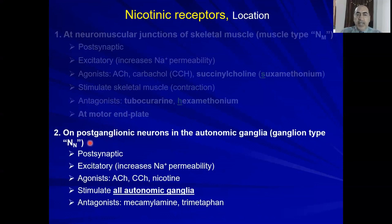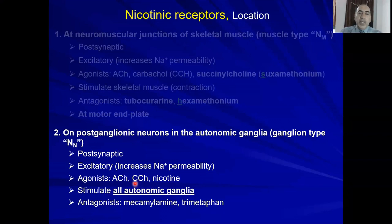The second subtype is NN, the ganglion type. It is present in all autonomic ganglia — both sympathetic and parasympathetic. The receptors are postsynaptic and increase sodium permeability, so they are excitatory. Agonists include acetylcholine, carbachol, and nicotine. Antagonists include mecamylamine and trimethaphan.